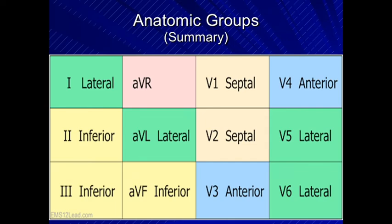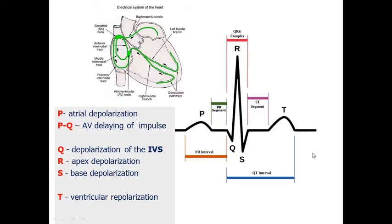ECG is very important because different leads give us different information. For example, if you want to assess the lateral part of the heart, you look at the 1st lead, AVL lead, V5, and V6. For inferior pathology, such as inferior myocardial infarction, it will be represented on the 2nd, 3rd, and AVF leads. V1 and V2 give us information about the septum, and V3 and V4 give us information about the anterior wall.